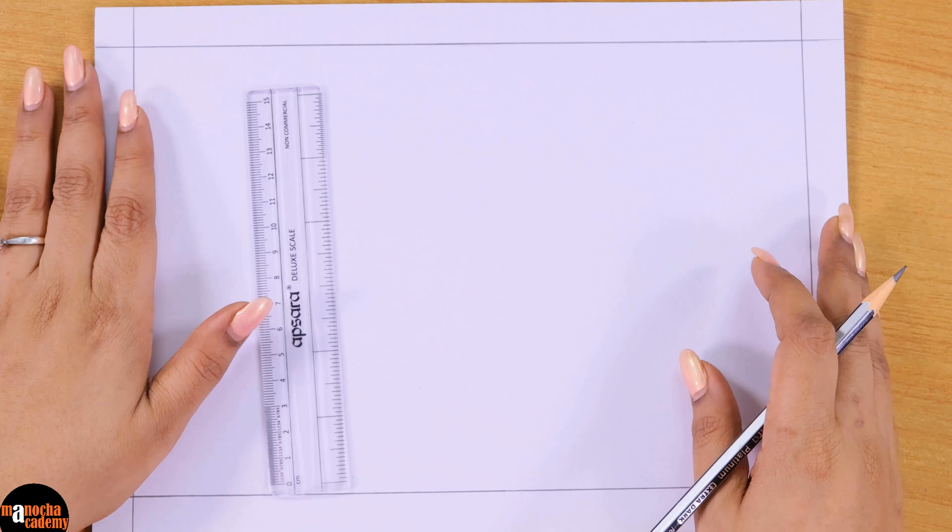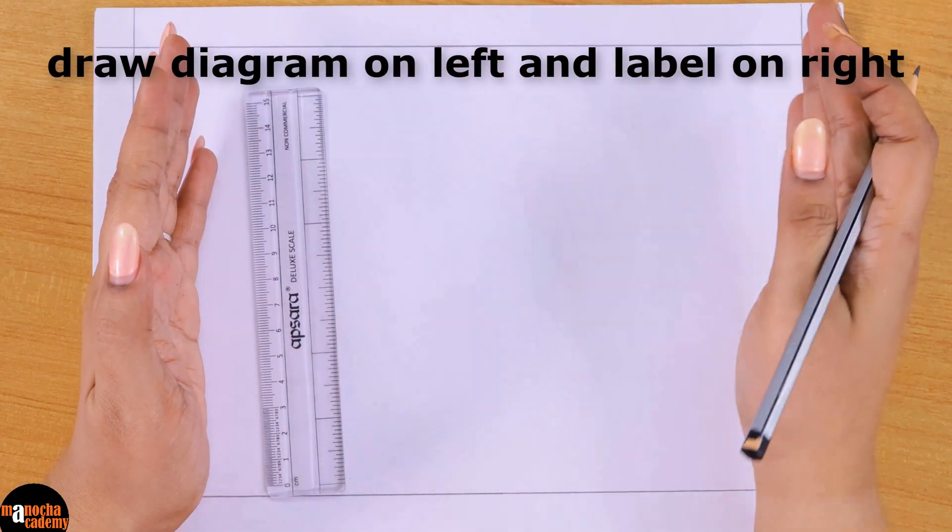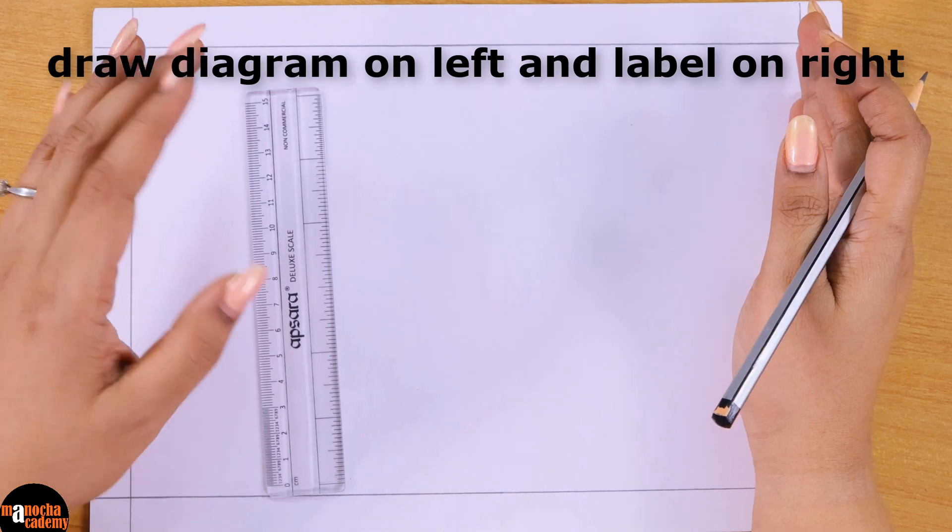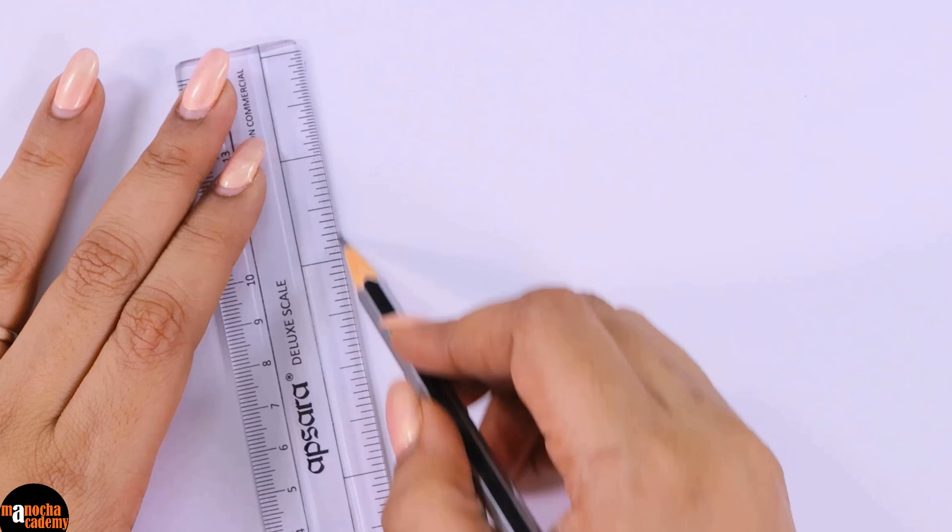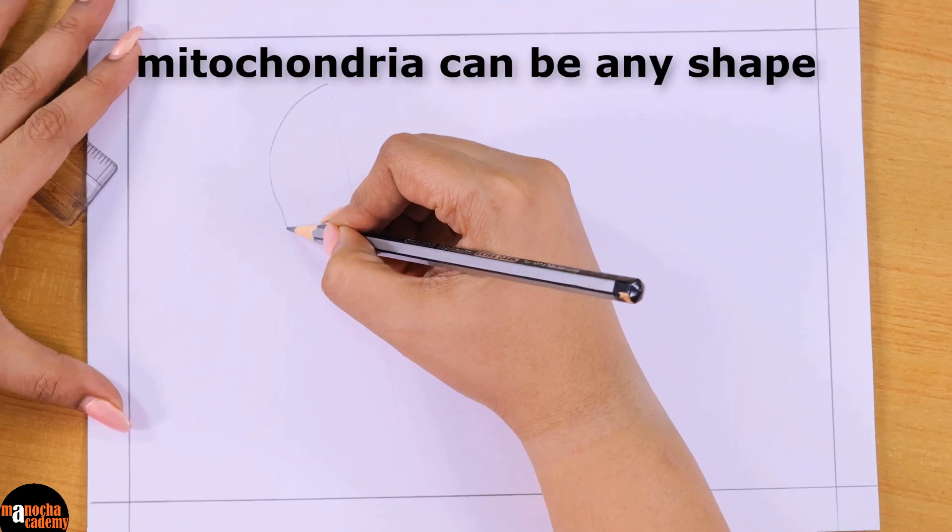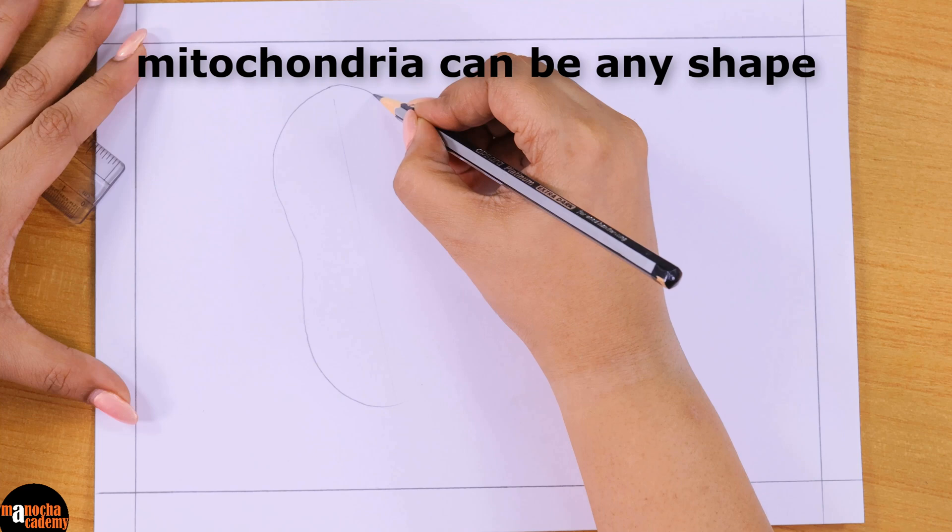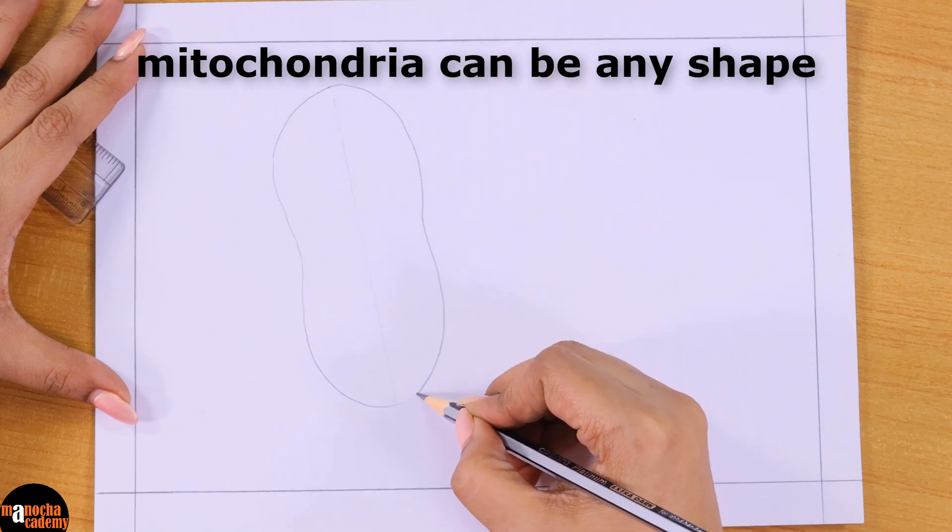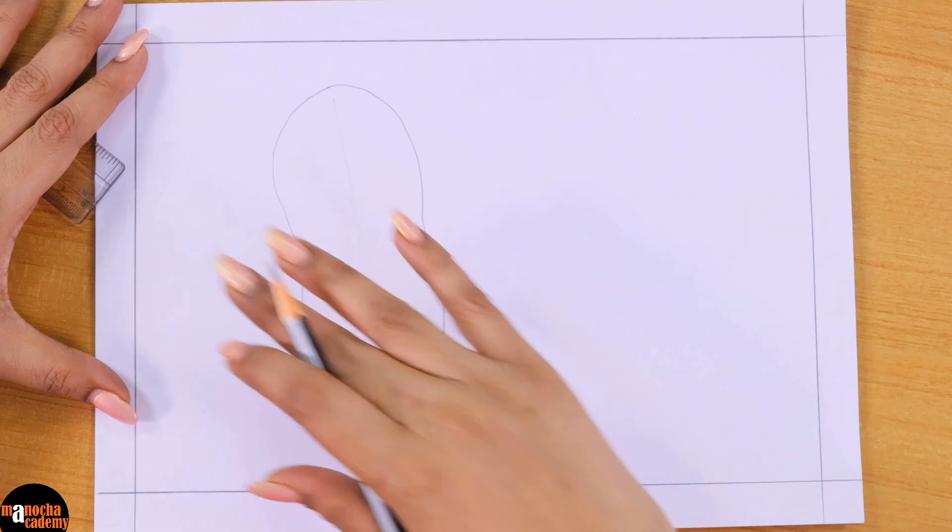So mitochondria can have any shape. I will try to keep the diagram as much as possible to the left so that I can make the labeling on the right. I'm drawing a reference line. This will be the length of the diagram that I will be drawing. I am trying to keep the structure elongated.